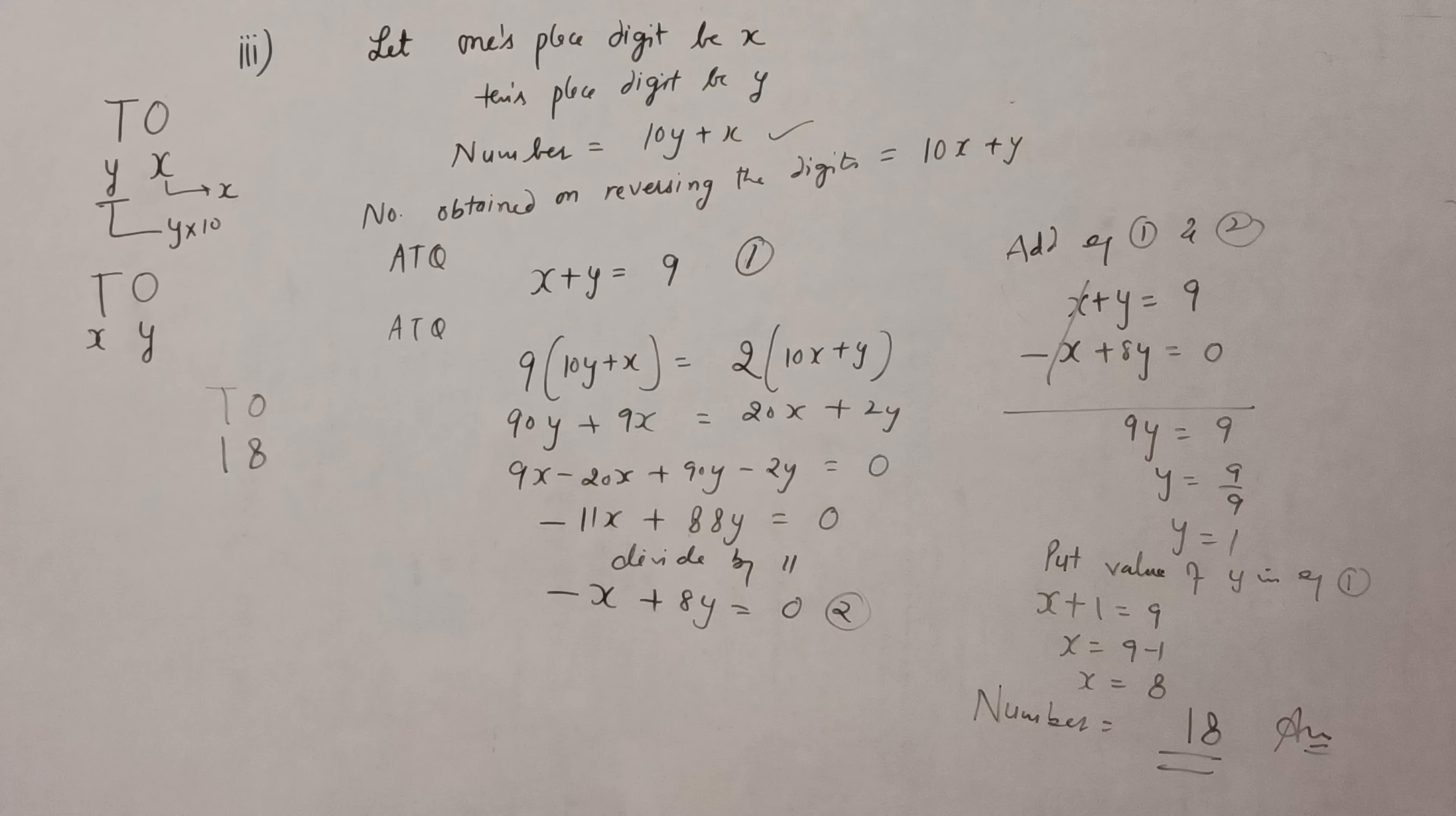So the number, 10s place digit is 1, so we will multiply it by 10. See, T O, Y is 1, X is 8, so the number will be 18.